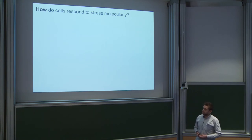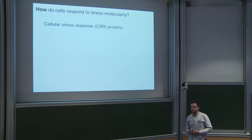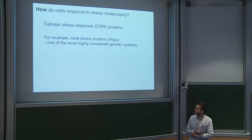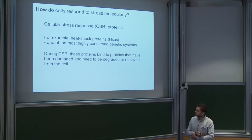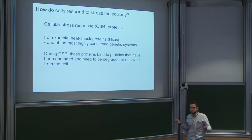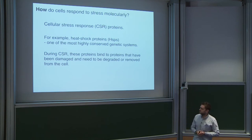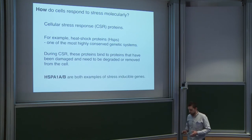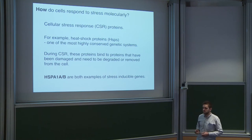So how do cells respond to stress molecularly? One way is through cellular stress response proteins such as HSPs — heat shock proteins — which were discussed earlier in the meeting. During cellular stress response, these proteins help facilitate damaged and degraded proteins out of the cell. Two examples of HSPs are HSPA1A and HSPA1B.